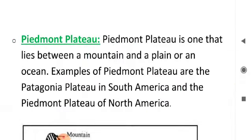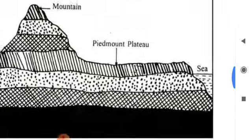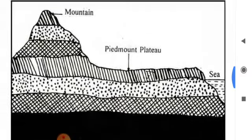The last division is Piedmont plateau. This kind of plateau lies between a mountain, plain, or an ocean. The middle portion is the Piedmont plateau.